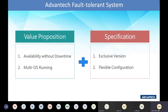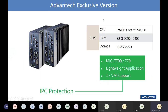After the introduction of the values we provide to customers, let us talk about the specifications of the FT system — fault-tolerance system. There are two benefits: exclusive version and flexible configuration. The name of the fault-tolerance software is Stratus Everrun, made by a United States company called Stratus. There are resellers and distributors selling Everrun in the market, but Advantech has signed an agreement with Stratus to have an Advantech-logo exclusive version. A standard Everrun license supports 28 virtual machines.